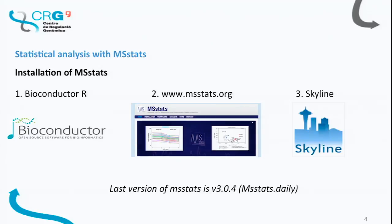MS-STATS is available from Bioconductor, from MS-STATS.org, or directly from Skyline as you will see in the tutorial. The latest version is version three, available on MS-STATS.org and in Skyline, though not yet in Bioconductor since updates there follow a different timeline and this version will be incorporated in the next few months.